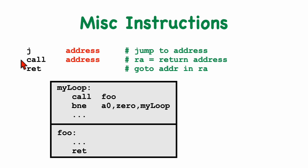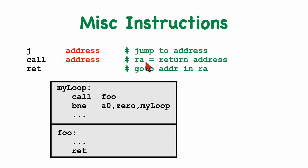RISC-V has three very important instructions that you'll be using a lot: the jump, the call, and the return instructions. The jump and call instructions take a target address, which is usually specified symbolically. In this code example we see a call instruction that calls a function named foo — a symbolic label — and down here we have the code for foo, which ends with a return instruction. The call instruction will save the return address in the RA register, and the return instruction will use the address in the RA register as the target to jump back to.